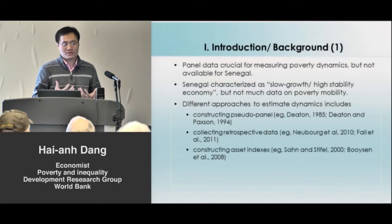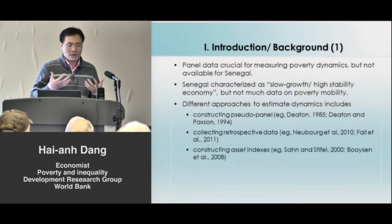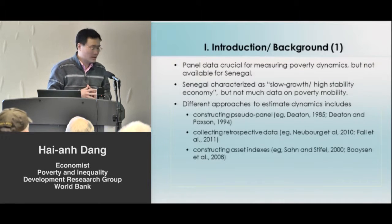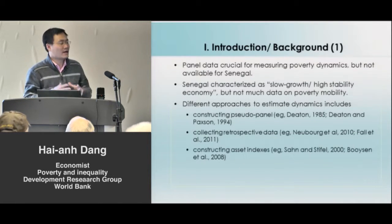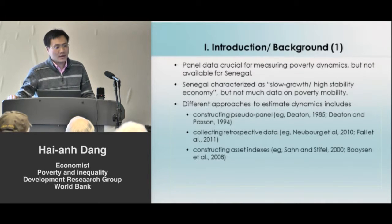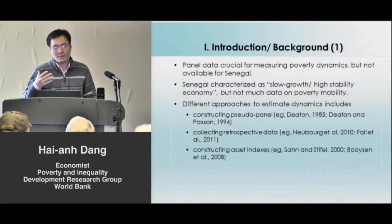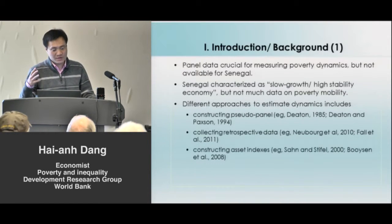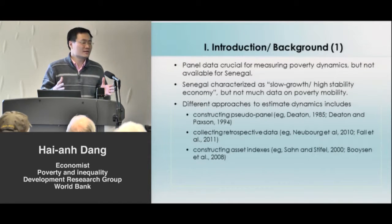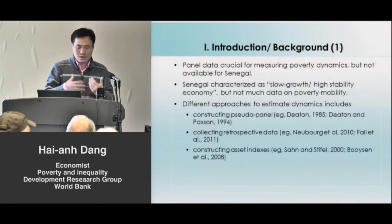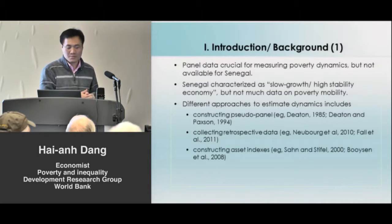If we only have cross-sectional survey data, what can we tell about poverty mobility or poverty dynamics over time? Knowing about the real dynamics is very relevant for policy makers, because we can have different policies for those in chronic poverty versus those in transitional poverty — either long-term policy or social protection measures to help people get out of poverty.